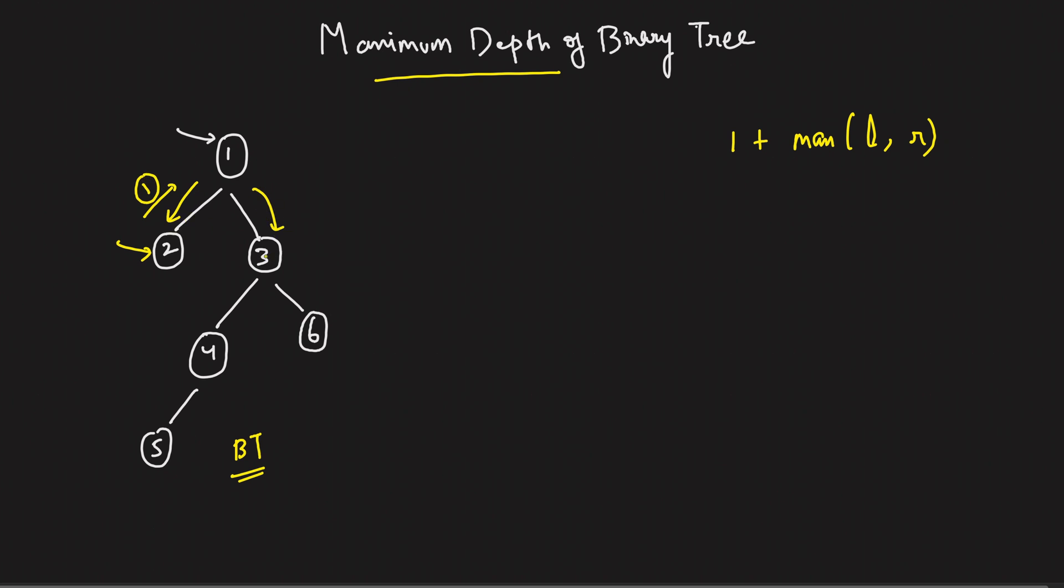So I come across node 3 and I know the answer will be 1 plus max of left and max of right. So we again go to the left and we again go to the right. Now, when we come across over here, I know one thing. For node 4, the answer will be 1 plus max of left and max of right. So again we go to the left.